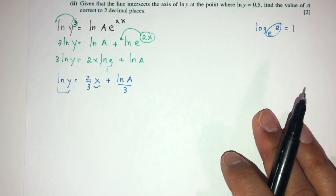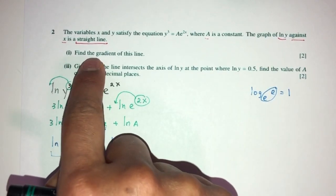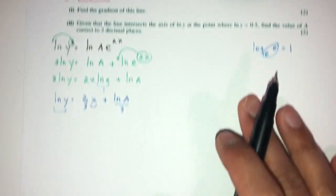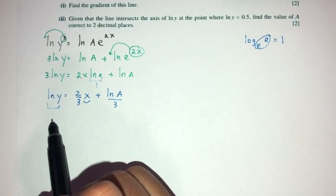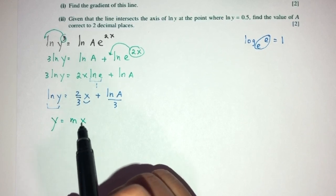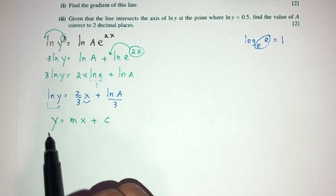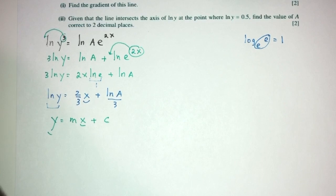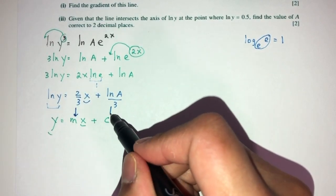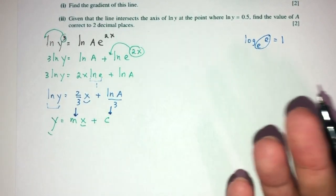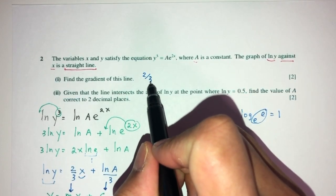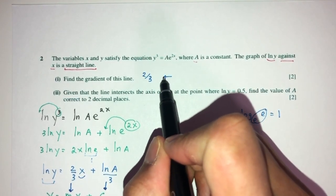For part one, we have to find the gradient of the line. We know we get a straight line, and by definition a straight line is y equals mx plus c when plotting y against x. By comparison, the gradient is 2 over 3 and the y-intercept is ln(A)/3. So my gradient is 2 over 3 — this is the value for part one.